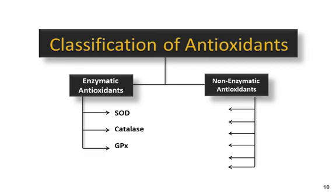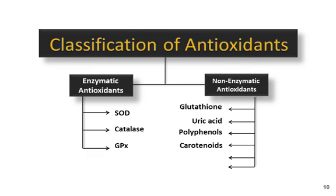Glutathione peroxidase is another enzymatic antioxidant that breaks down hydrogen peroxide and organic peroxides into alcohol. Non-enzymatic antioxidants include glutathione and other compounds that help reduce lipid peroxidation.